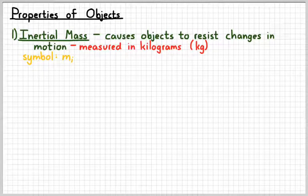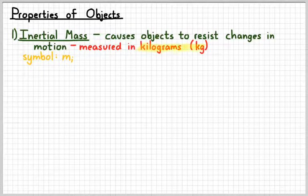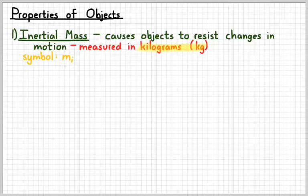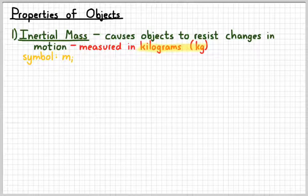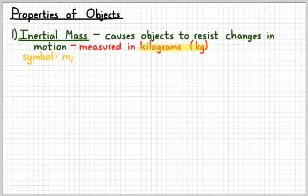In chemistry, you probably use grams instead of kilograms. We use kilograms in physics because it's a more convenient size mass relative to the objects that we're typically studying. So, for example, if we're talking about an object as big as a car, it's more convenient to express its mass in kilograms than in grams.